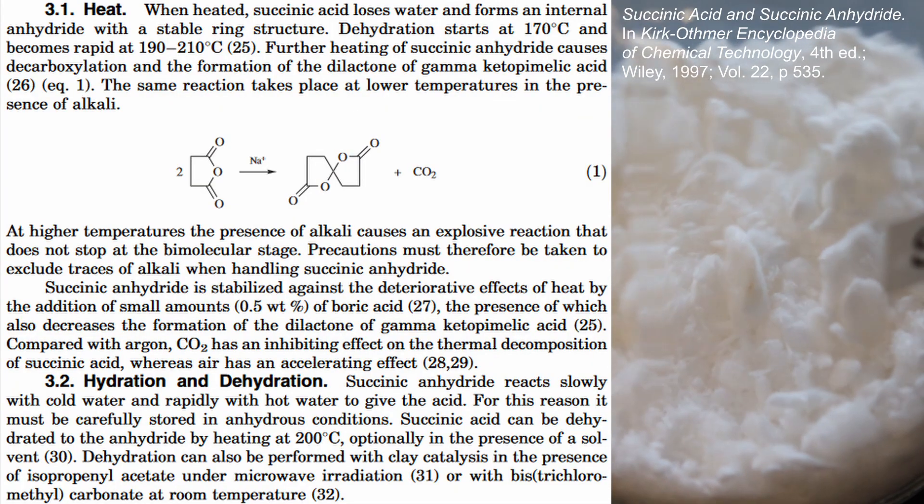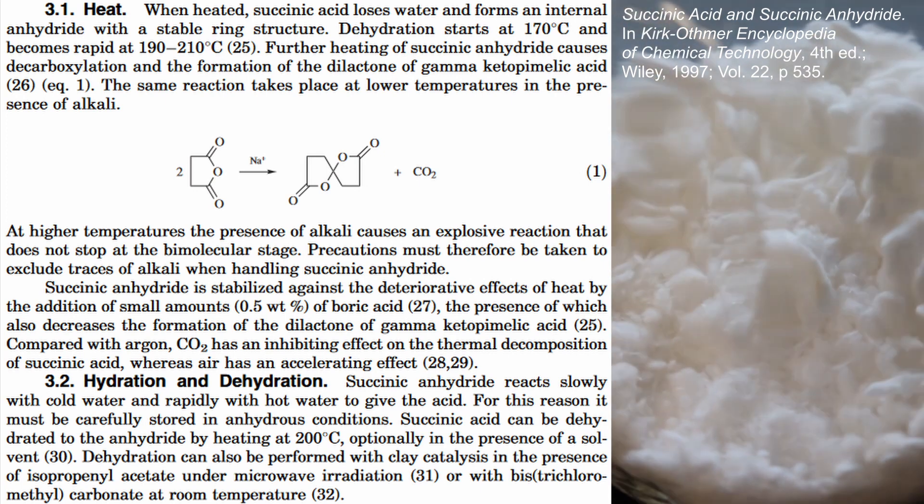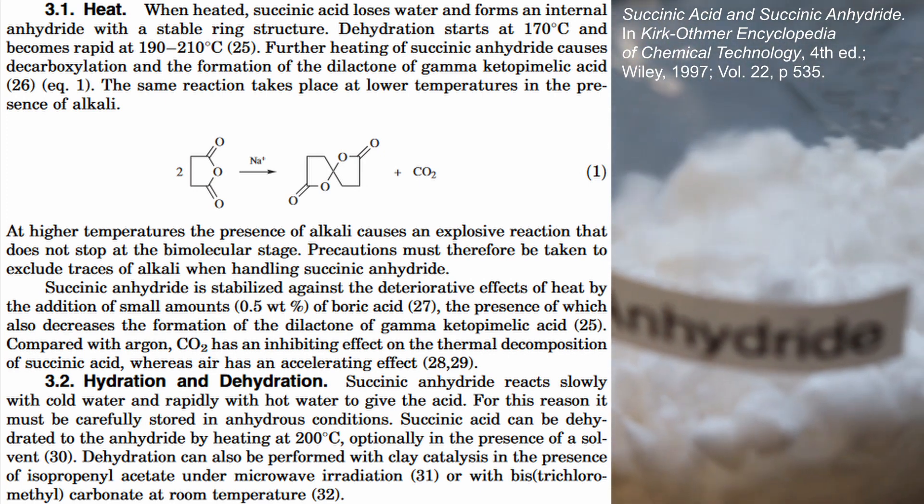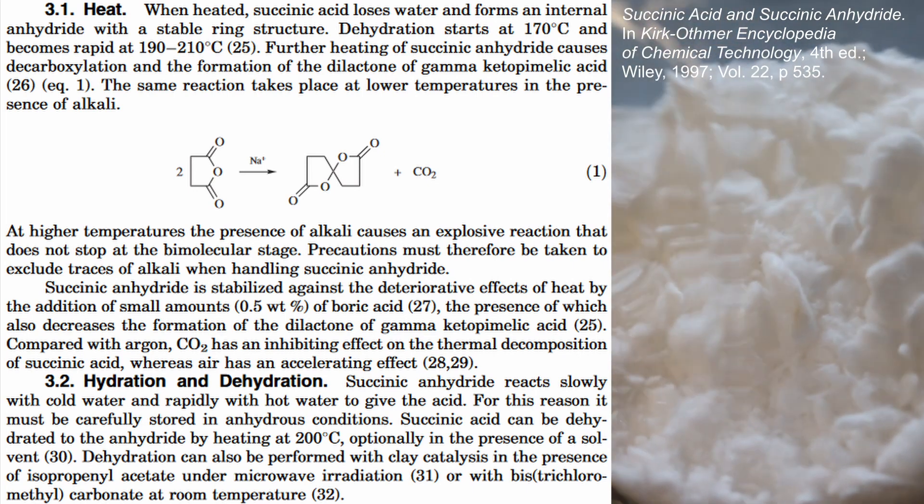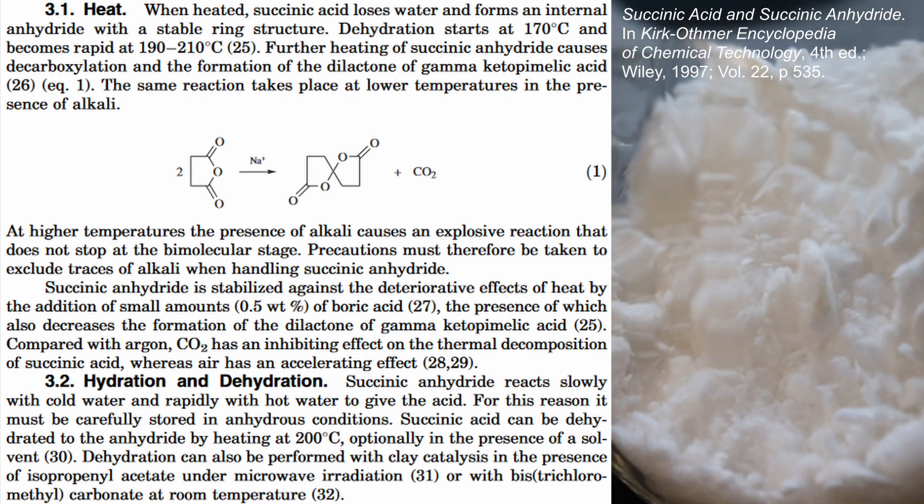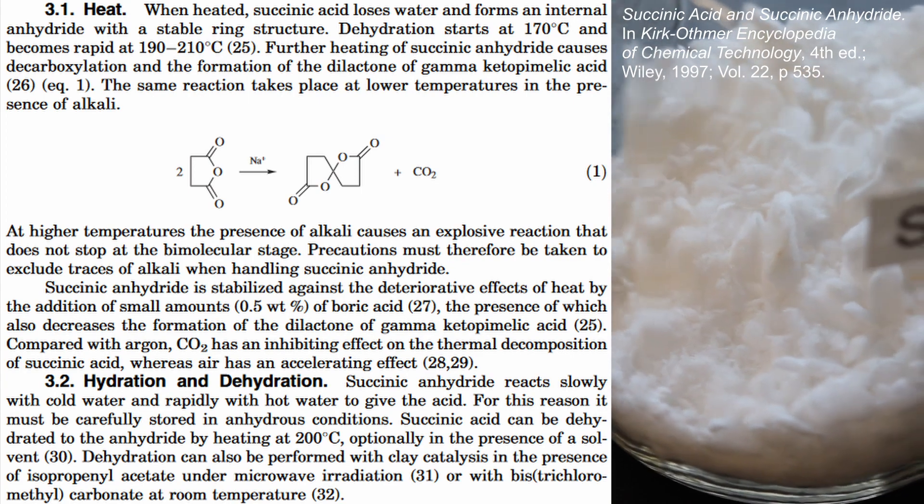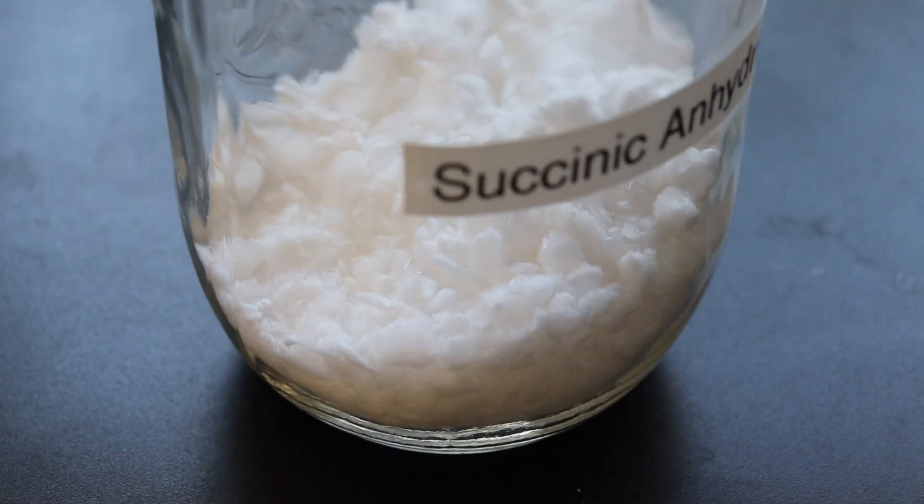There are some other methods to make succinic anhydride without acetic anhydride through thermal dehydration. However, most of these are based on patent literature which is notoriously unreliable. I looked around to see if there was any amateur procedures for the thermal dehydration but didn't really find anything, so if you know of one, leave a comment.